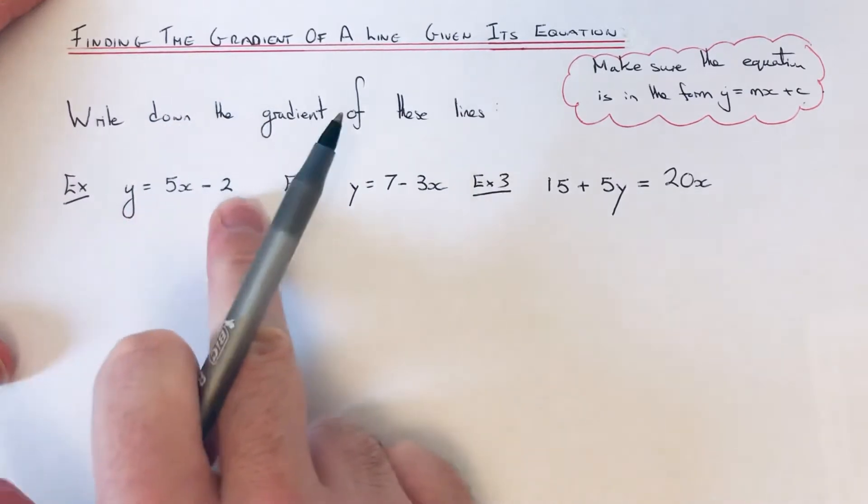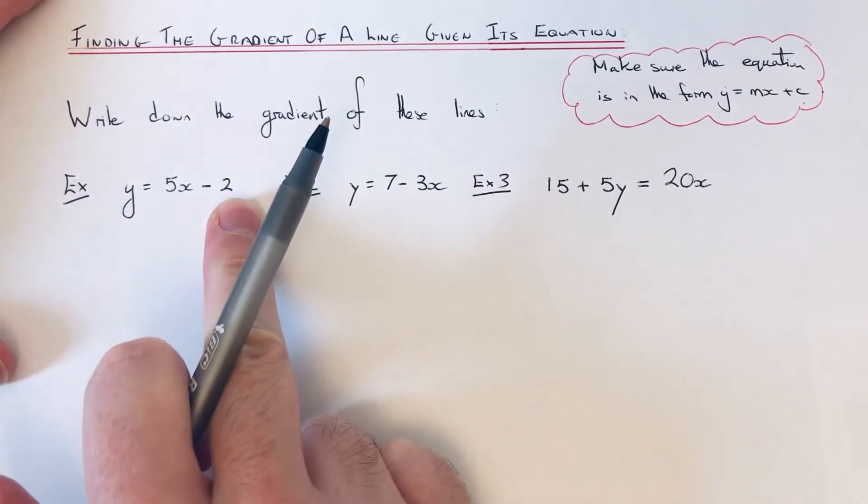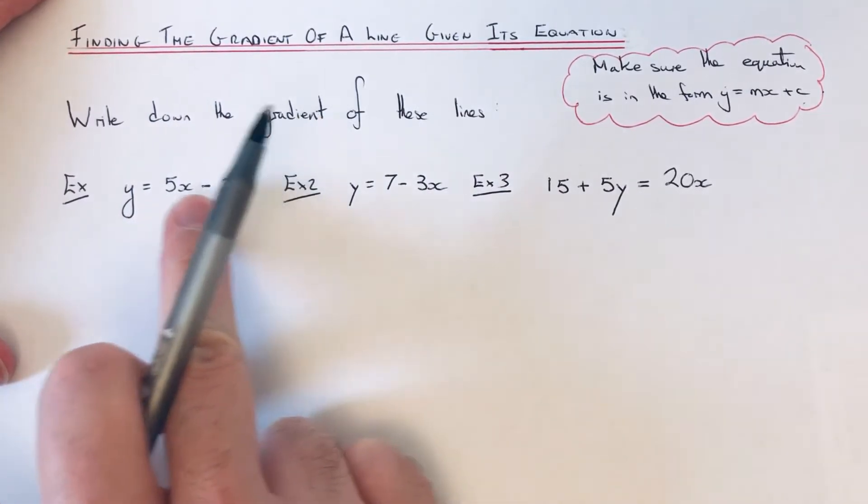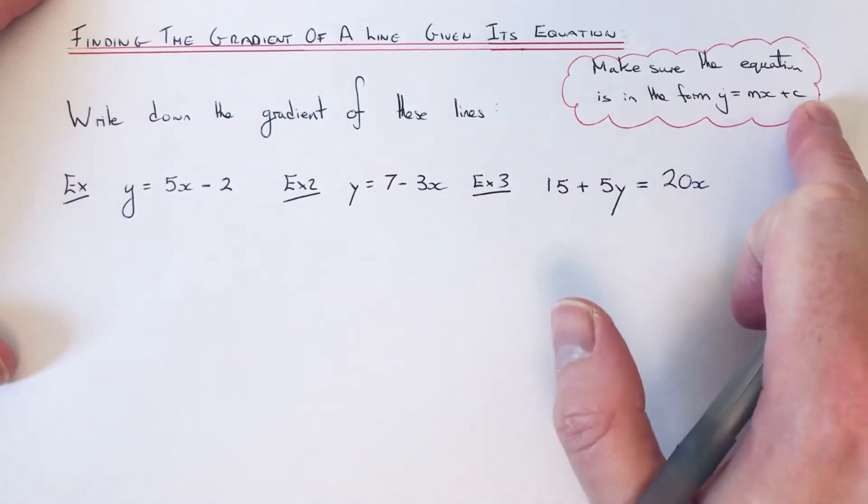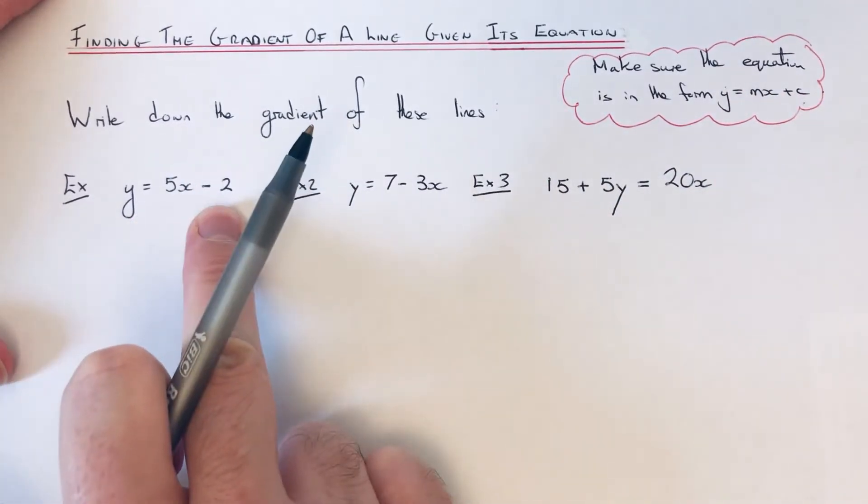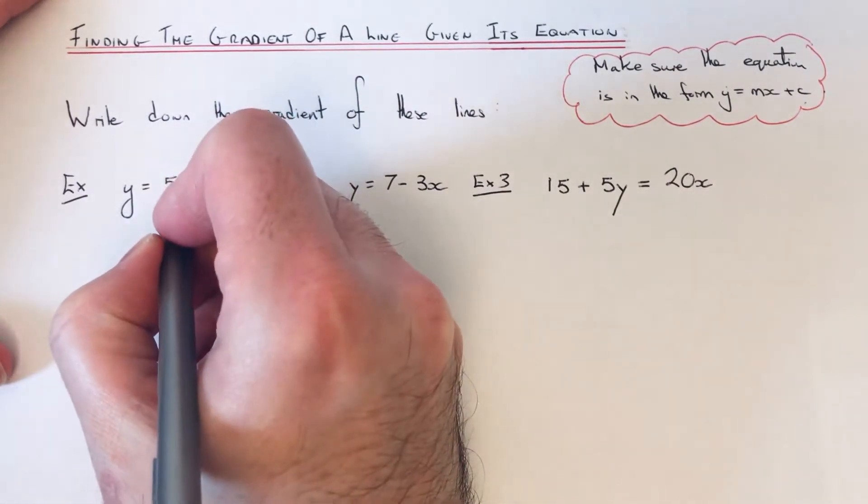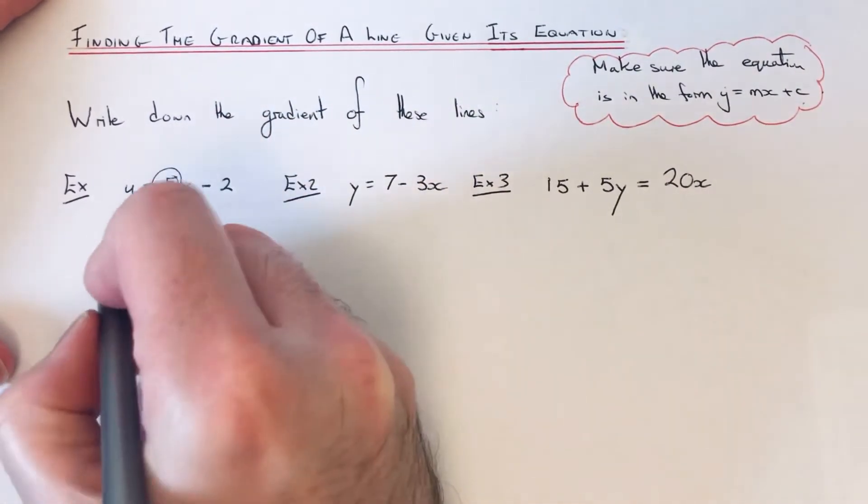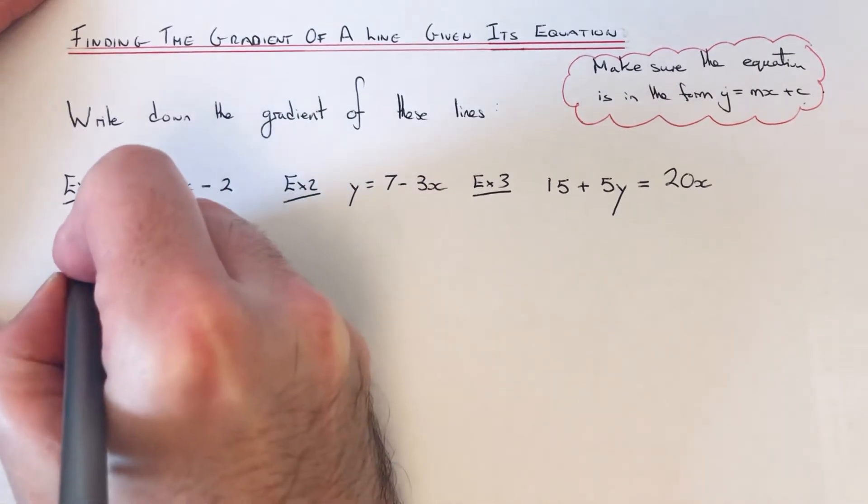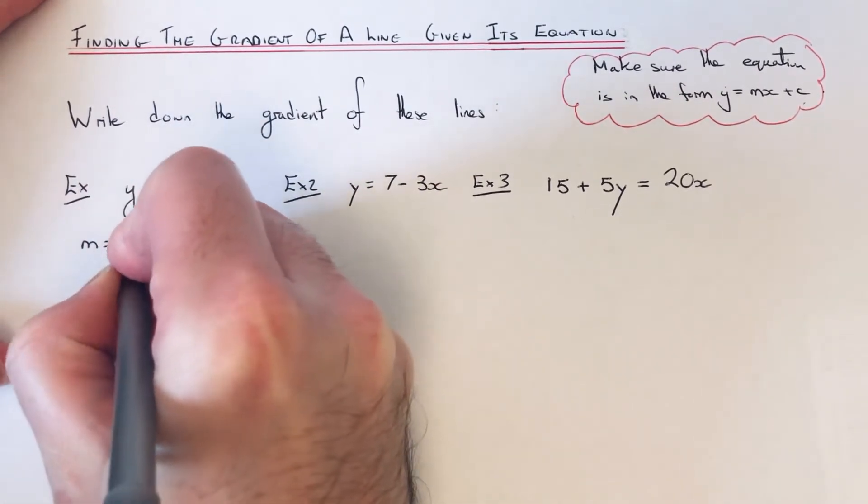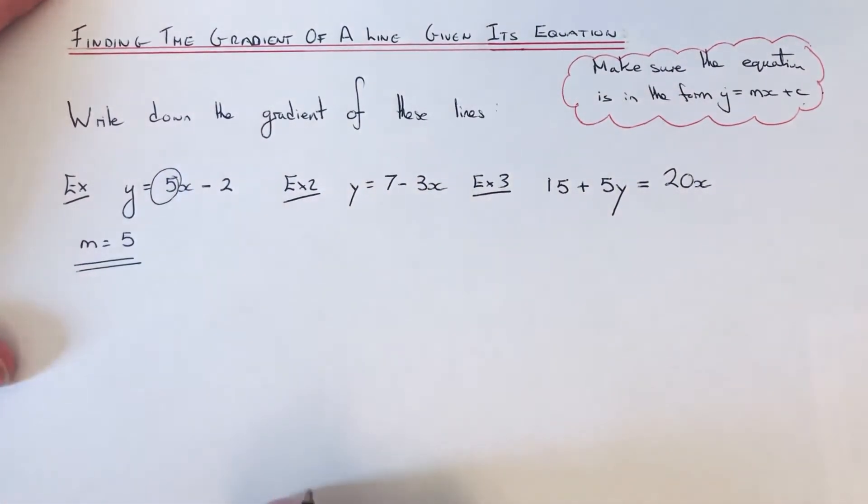Our first line is y equals 5x minus 2. This is in the form y equals mx plus c, so we don't need to do anything to this first one. All we need to do is just look for the number before x. The number before x is 5, so this first one has a gradient of 5, so m equals 5.